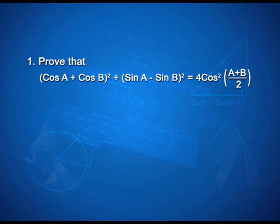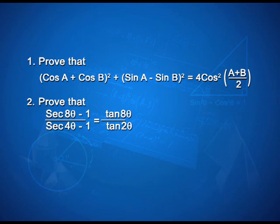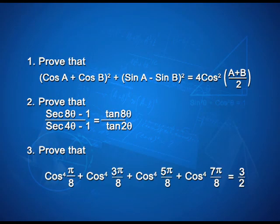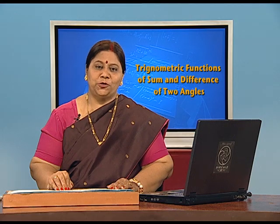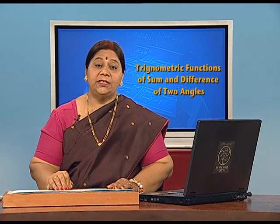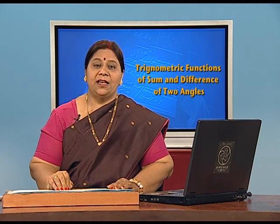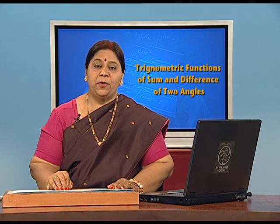There is a home assignment for you. Question 1: Prove that (cos a + cos b)² + (sin a − sin b)² = 4cos²((a+b)/2). Question 2: Prove that (sec 8θ − 1)/(sec 4θ − 1) = tan 8θ / tan 2θ. Question 3: Prove that cos⁴(π/8) + cos⁴(3π/8) + cos⁴(5π/8) + cos⁴(7π/8) = 3/2. Today we have learnt about various identities and how they can be used to solve problems. In the next session, we shall study about trigonometric equations.